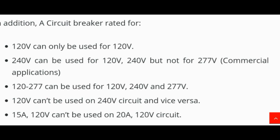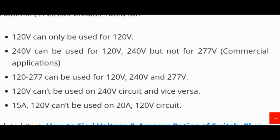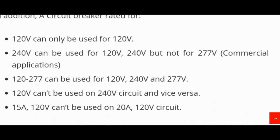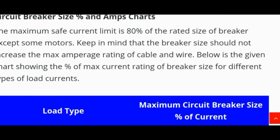A breaker cannot be larger than the capacity or ampacity of the wire, except for some loads like motor loads. A circuit breaker rated for 120V can only be used for 120V or 240V, but not for 277V commercial appliances. A breaker rated 120–277V can be used for 120V, 240V, and 277V. A 120V circuit breaker cannot be used on a 240V circuit and vice versa. A 15 ampere 120V breaker cannot be used on a 20 ampere 120V circuit.